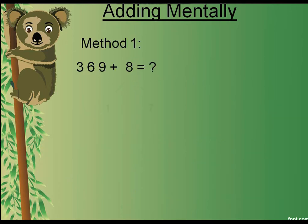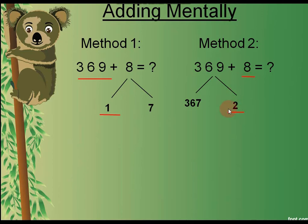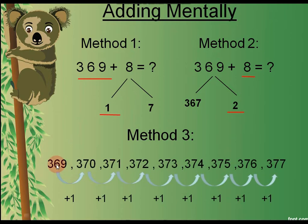So these were the three possible methods we discussed. The first method was about breaking the second number into two parts, making 69 into 70 by adding 1. In method two, we preferred to make 10 by taking two numbers from the first number, then adding 10 to 367. In the third method, we counted on from the first number for eight steps to find the answer.